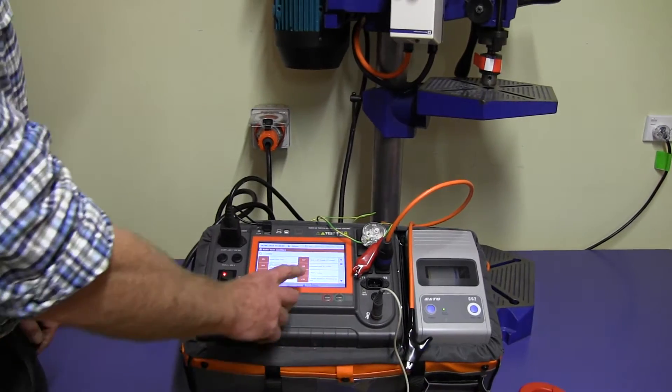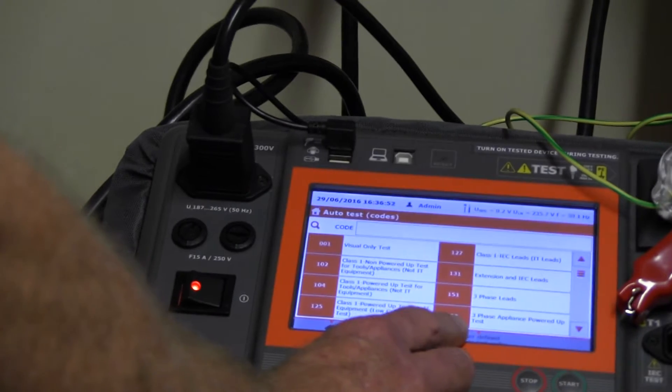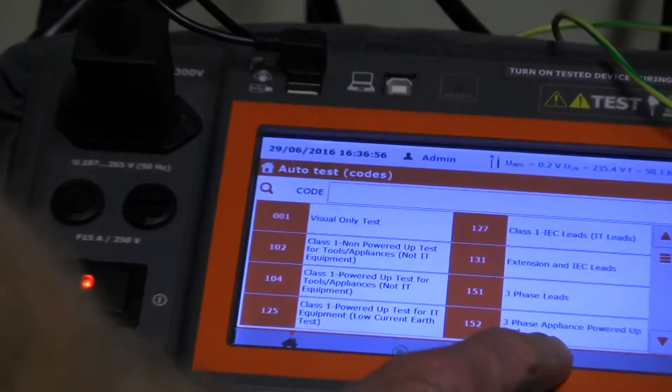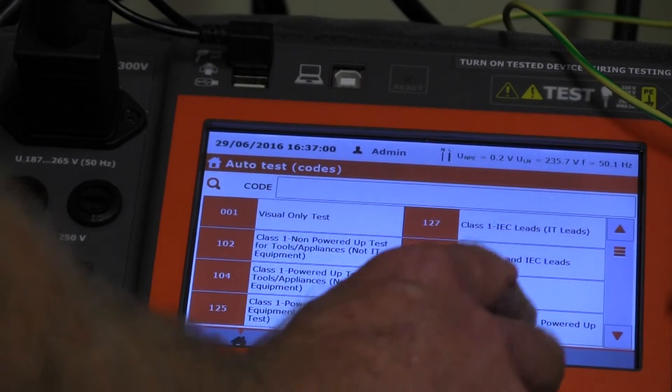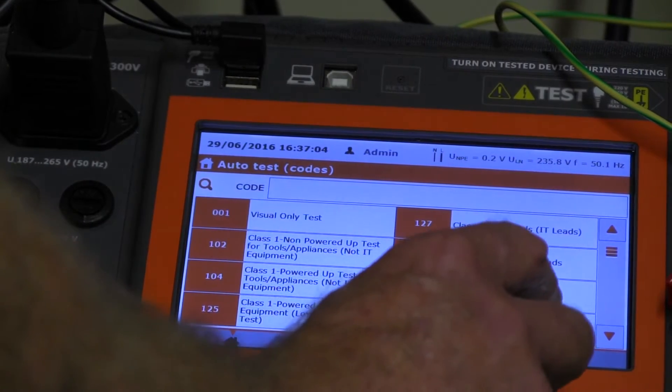We've gone into auto test mode here. We're going to select test code 152, which says three-phase appliances powered up test. Then we'll select that and attach the adapter lead and do the test.